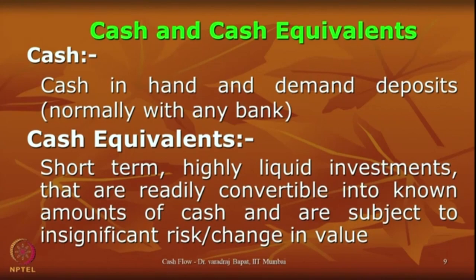Any item where cash movement is involved will be shown in the cash flow. Every flow has to be categorized into 3 heads: operating, investing, and financing. Now, when we say cash in a cash flow statement, it always refers to cash and cash equivalents. Cash is cash in hand — currency notes — plus demand deposits. Demand deposits are normally kept with a bank, so in financial statements we call it bank balance. So cash balance plus bank balance, both are considered.